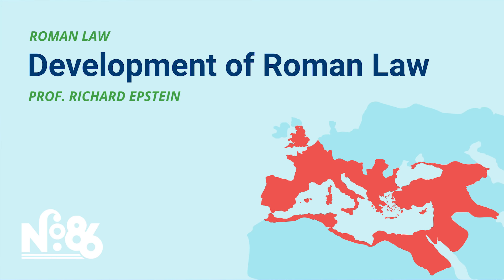Thanks for joining this episode of the number 86 lecture series, in which Professor Richard Epstein discusses how the Roman legal system developed and adapted from republic to empire to expansion, the difference between public and private law in the Roman system, and common law versus statutes in the Roman system. This lecture is part of a series with Professor Epstein on how this ancient legal system can provide crucial insights about modern problems.